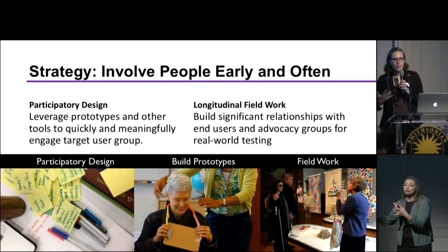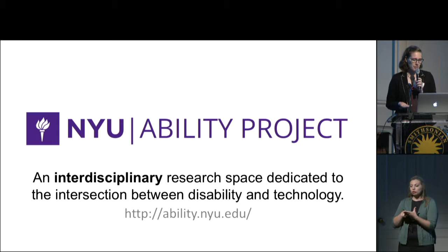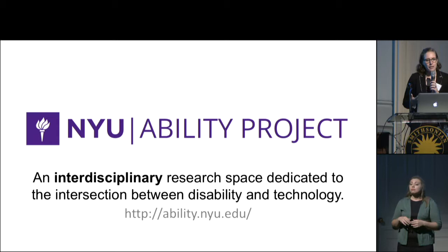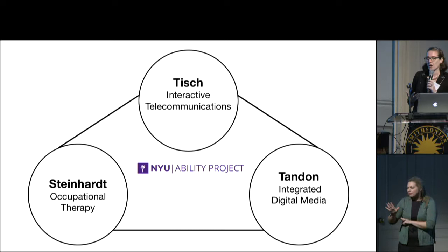So what is the NYU Ability Project? It's an interdisciplinary research space dedicated to the intersection between disability and technology. The key word here is interdisciplinary. At the Ability Project we are always thinking about interdisciplinarity and how we can bring people with lots of different expertises together to solve these accessibility challenges.